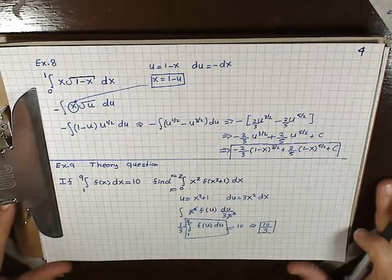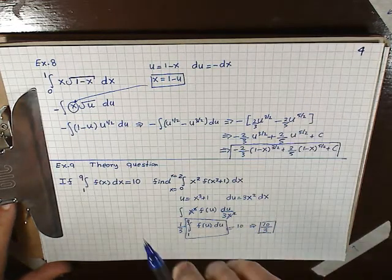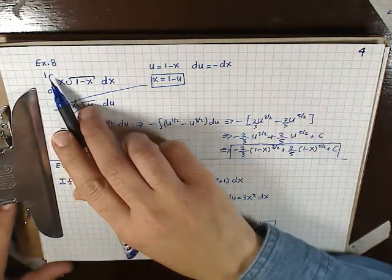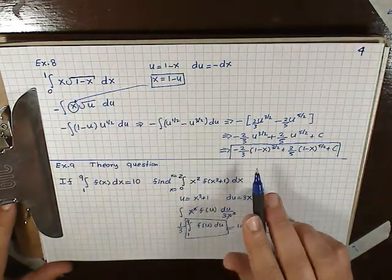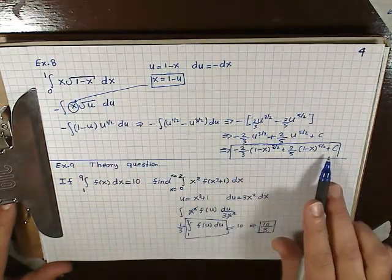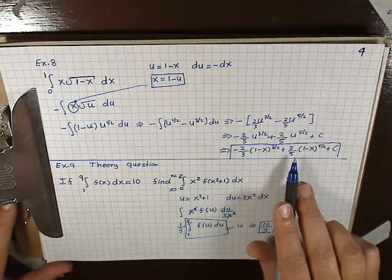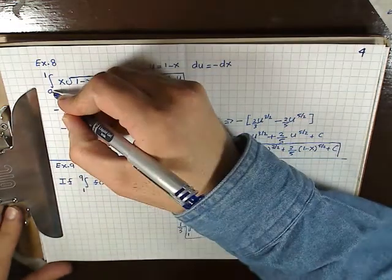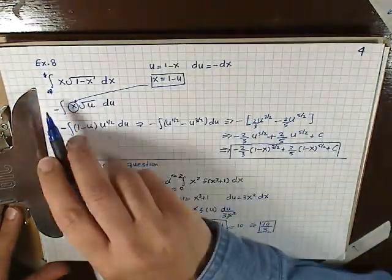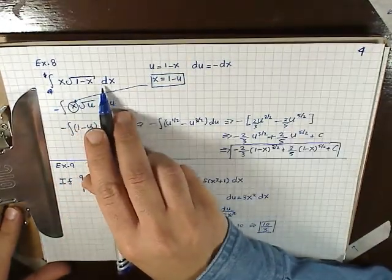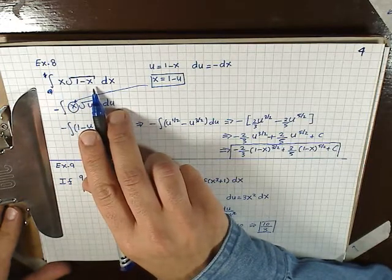I need to make a correction to example 3. We wrote the integral from 0 to 1 of x·√(1 − x) dx, but the answer includes + C, meaning it must be an indefinite integral. There are no limits of integration — this is just the plain indefinite integral of x·√(1 − x) dx.